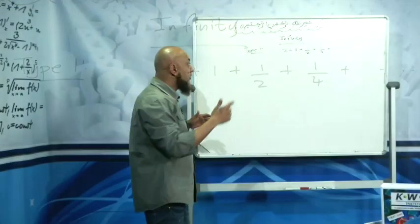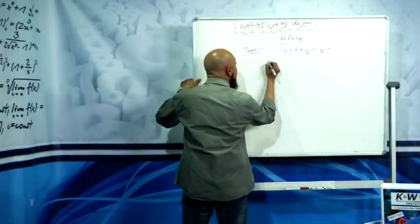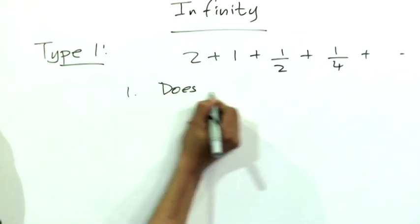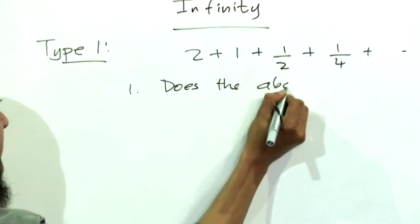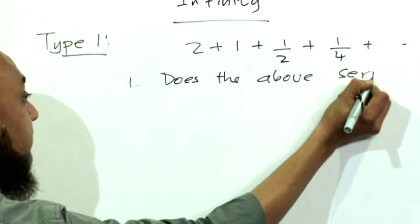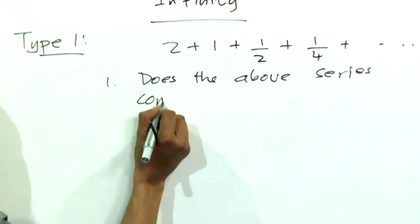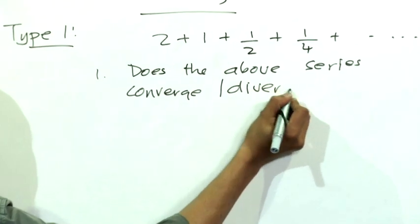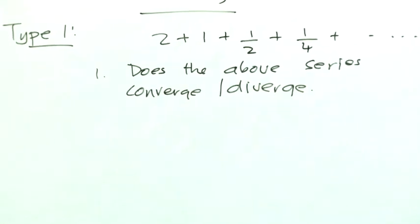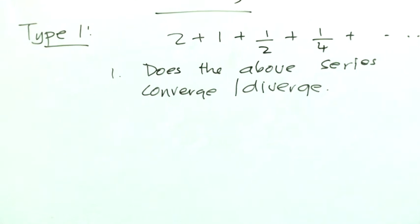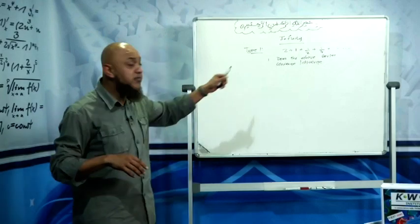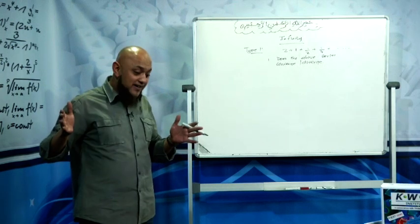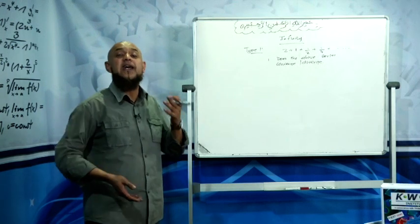Now they will ask you two types of questions. Number one: does the above series converge or diverge? You've seen this for those of you who have written the Department of Education National Common Paper. These types of questions came out.